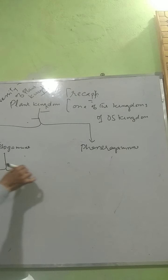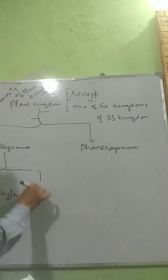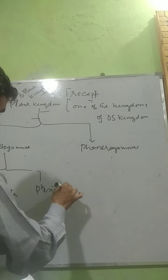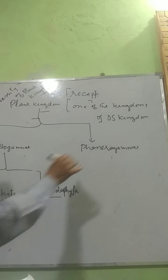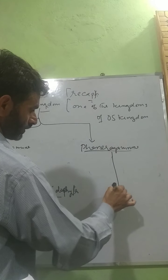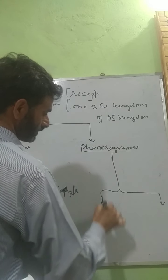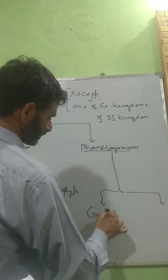Under Cryptogamia, we have two major divisions: one is Bryophyta and the other division is Pteridophyta. Under Phanerogamia, we have Gymnospermae and Angiospermae as divisions.